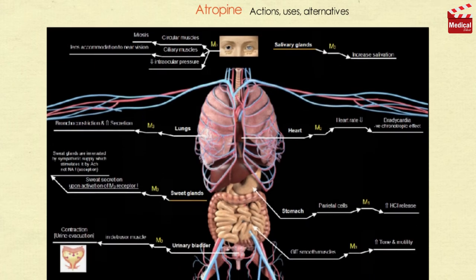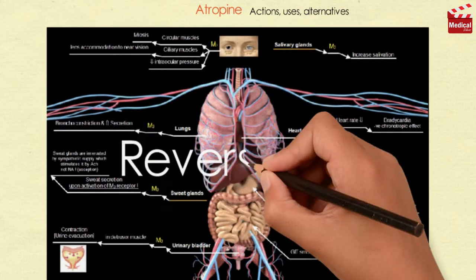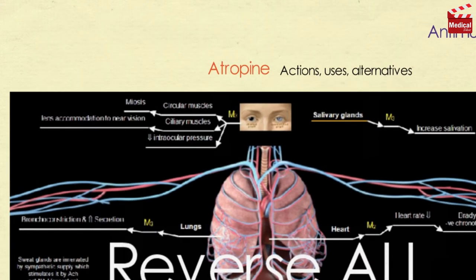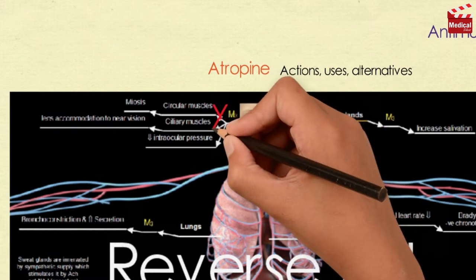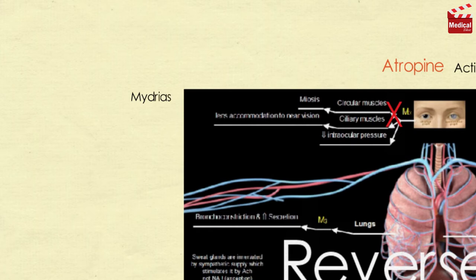To discuss its actions, we have to go back to the autonomic receptors lecture where we knew the effects of parasympathetic innervation on each muscarinic receptor, then reverse all we said, as atropine blocks these receptors. Now let's discuss atropine's actions, uses, and its alternative antimuscarinic drugs at the same time.